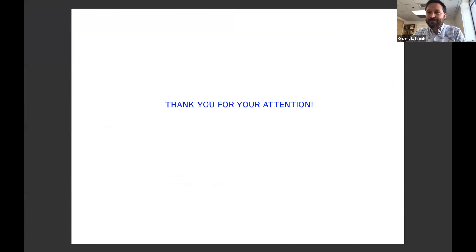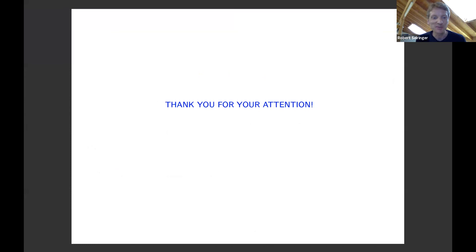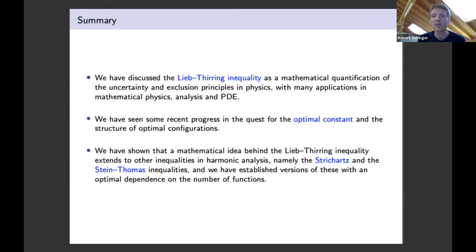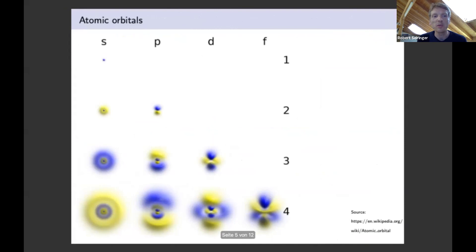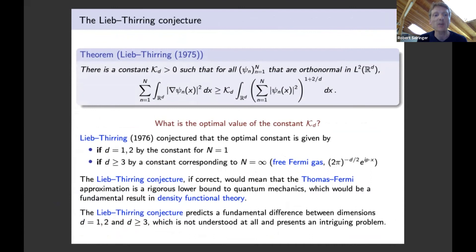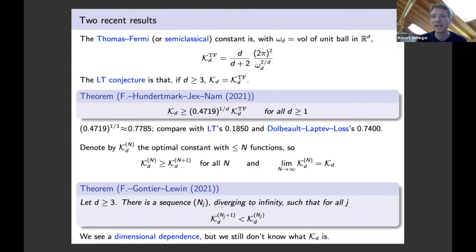Thanks very much, Rupert, for this very nice lecture. We have time for questions — please raise your hand and I can unmute you. Maybe I'll ask one: in your statement about the Lieb-Thirring conjecture and the strict increase of optimal constants with N, you explained there was no good heuristic explaining why N should want to go to infinity. But your proof does show N wants to go to infinity. Does the proof also clearly show what goes wrong in the opposite regime, and is there a simple explanation for where the condition on γ — something like 1−d/2 — comes from? Do you expect this to be sharp?